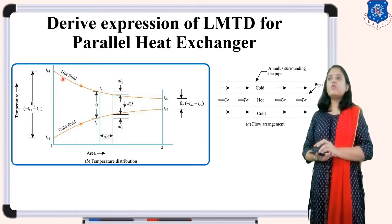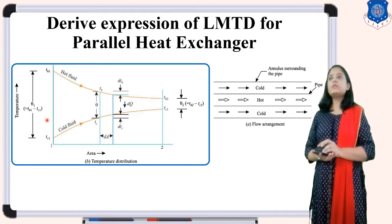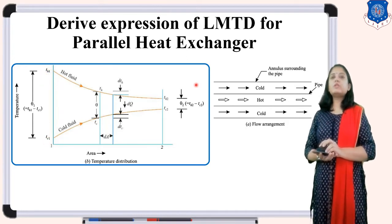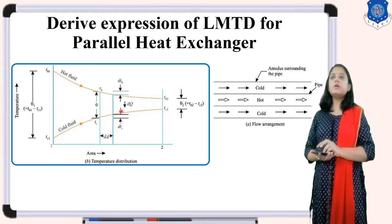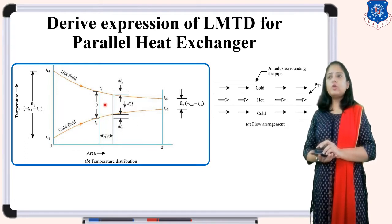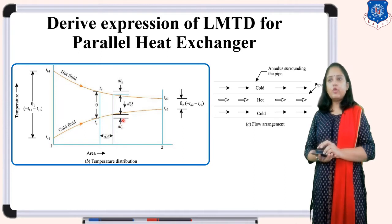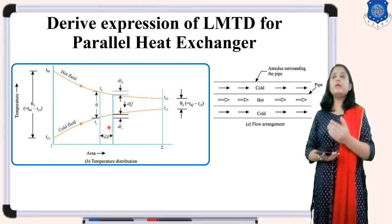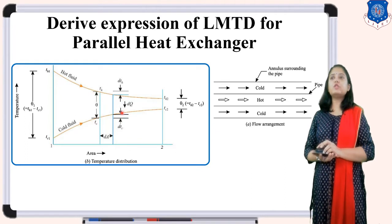At entry, the temperature difference between hot and cold fluid is theta1 = TH1 - TC1. At exit, theta2 = TH2 - TC2. For derivation, we take a very small strip from the heat exchanger. The change in temperature of the hot fluid in this strip is DTH, the change for cold fluid is DTC, the strip area is DA, and the net heat transfer is DQ.